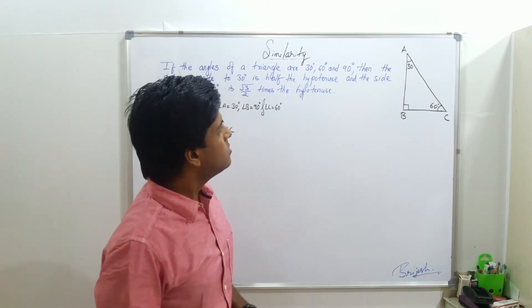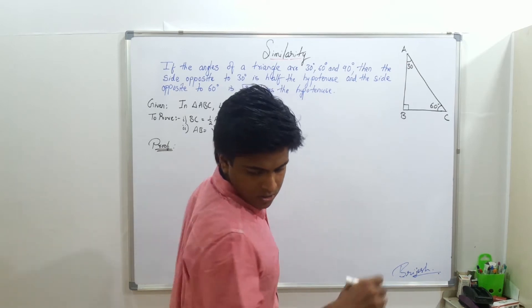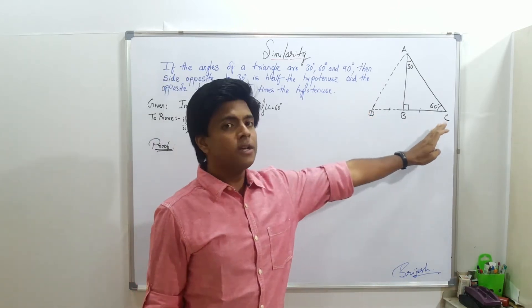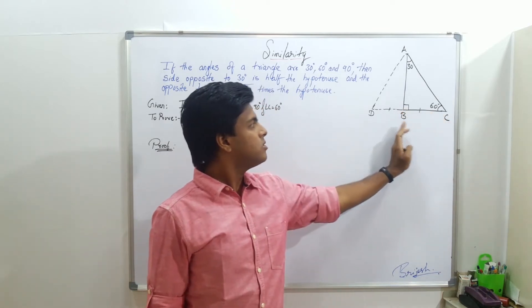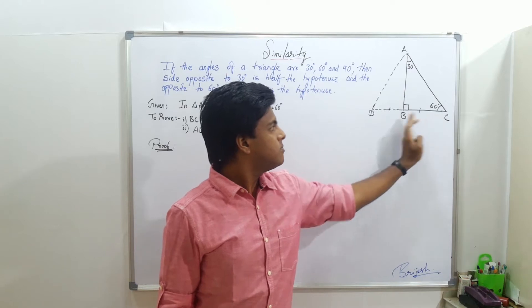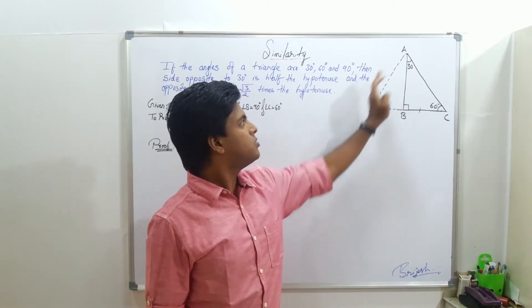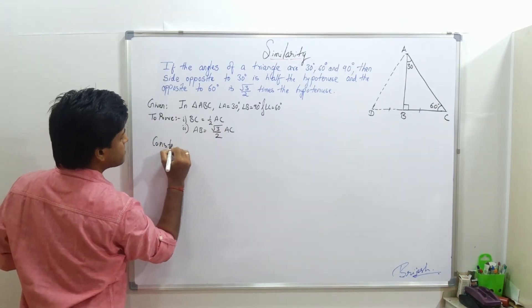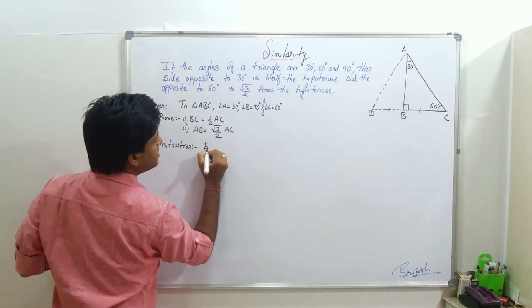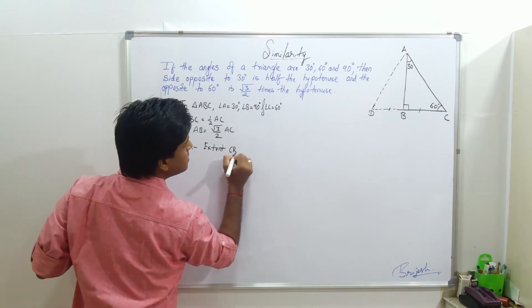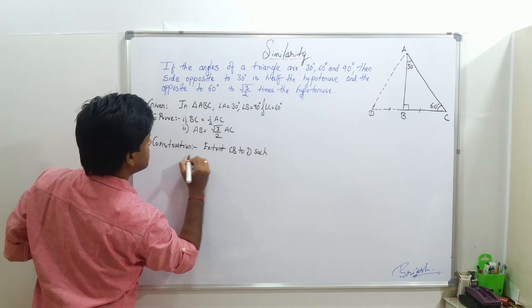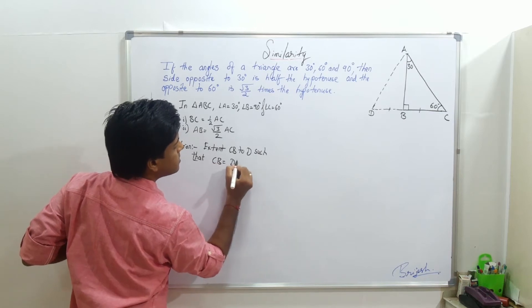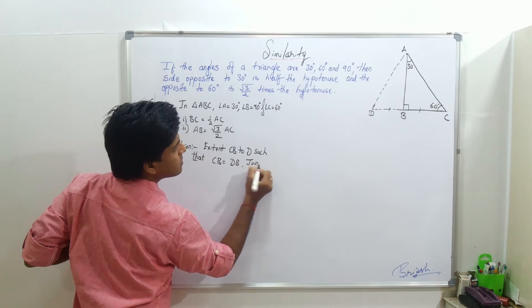So what we will do is a construction. The construction is to extend BC to D such that CB equal to DB, and we will join AD.